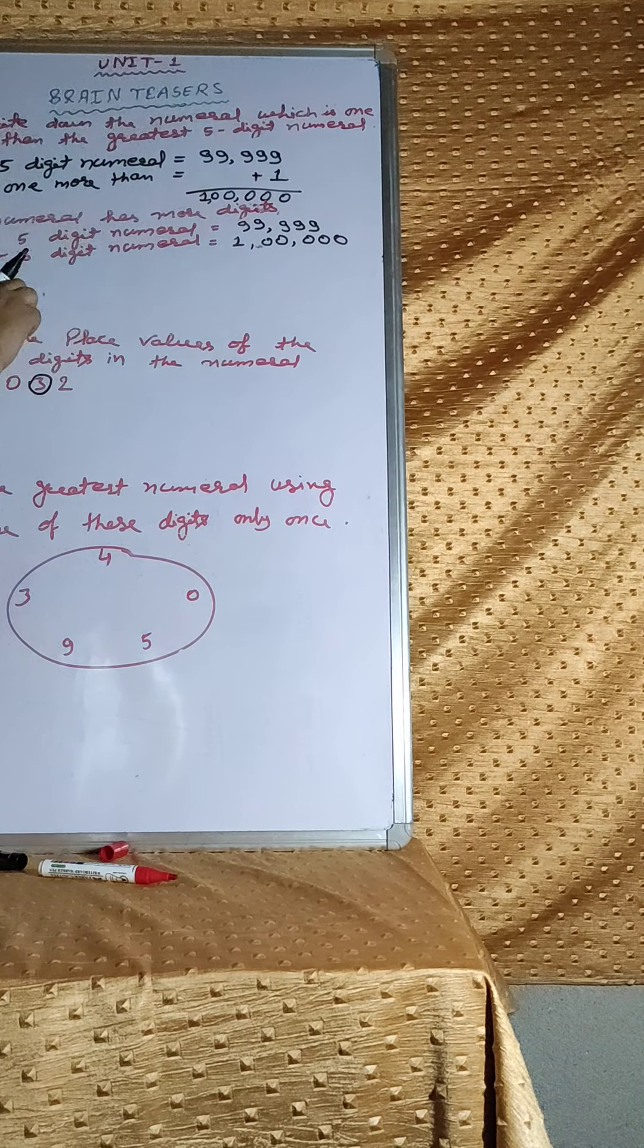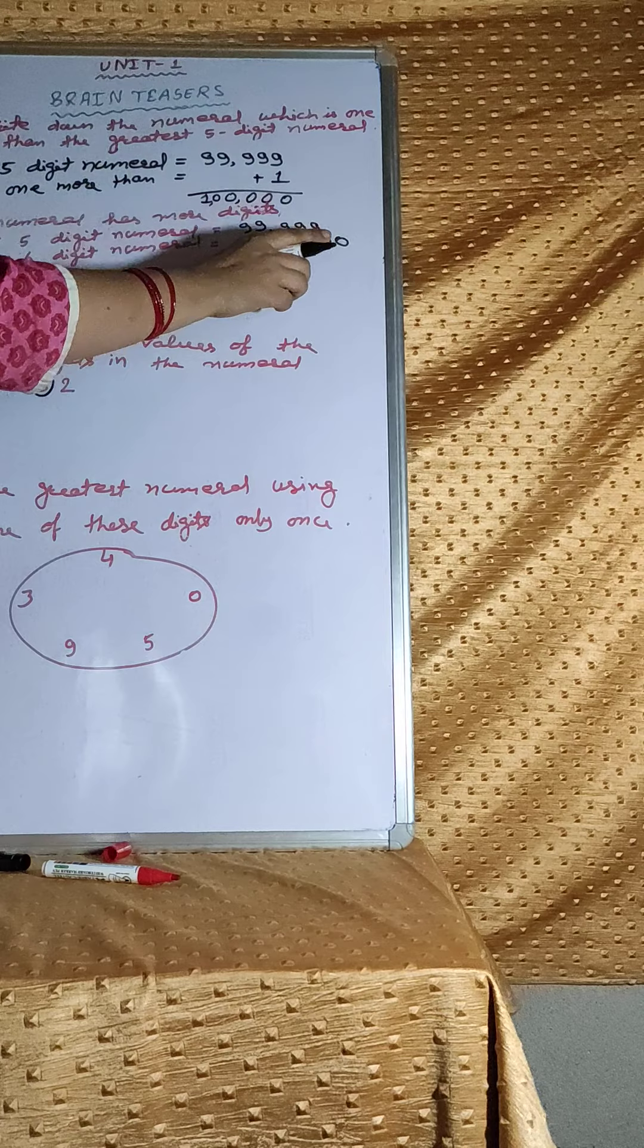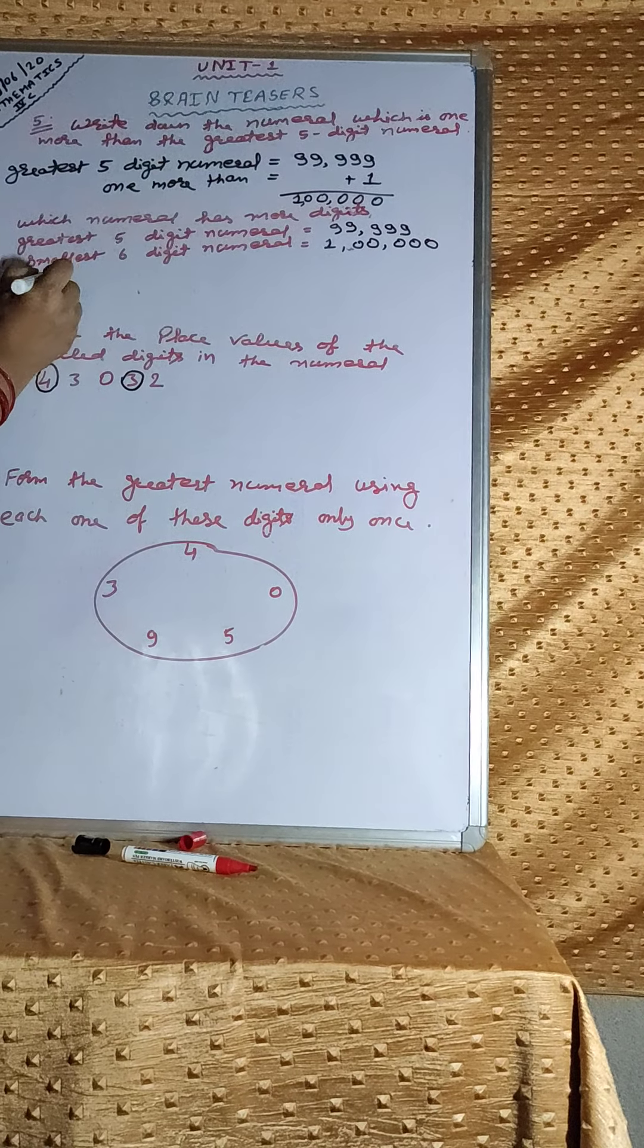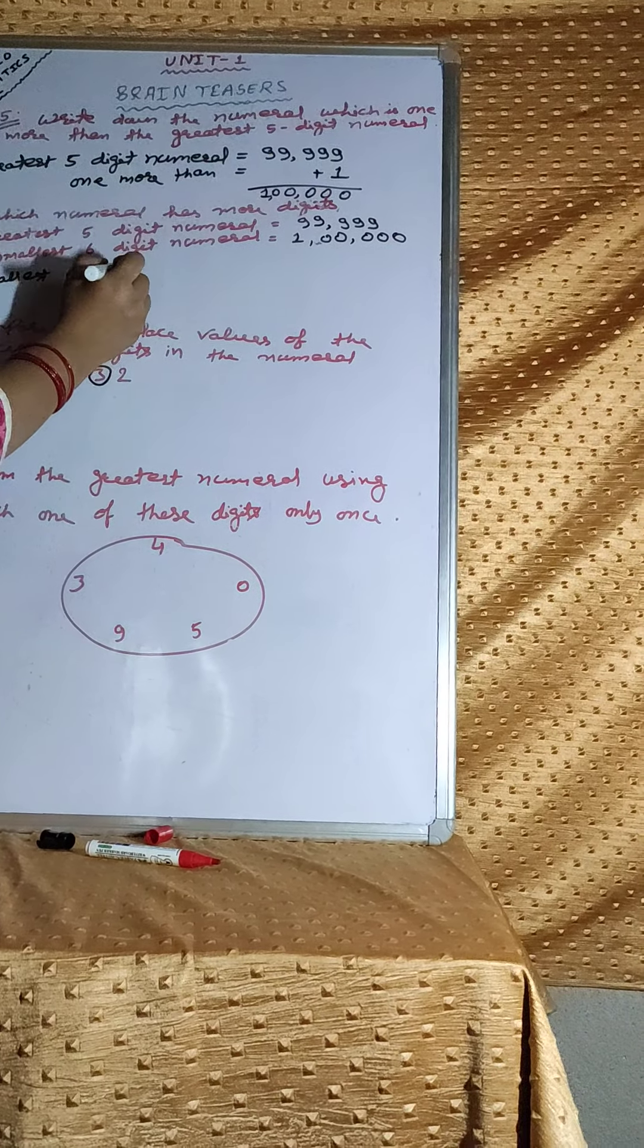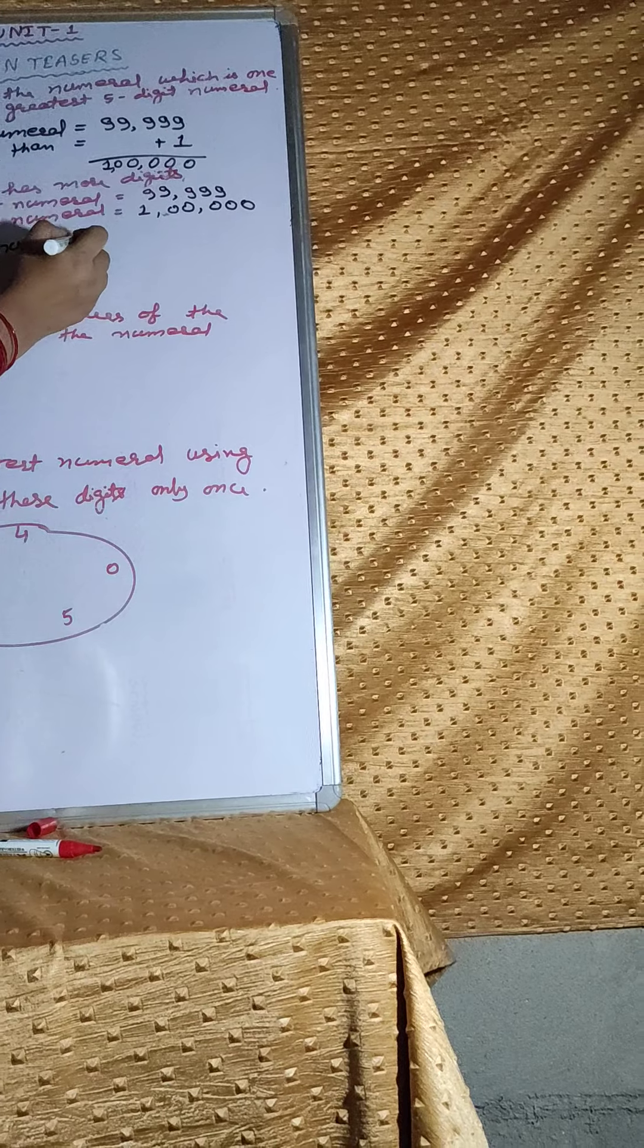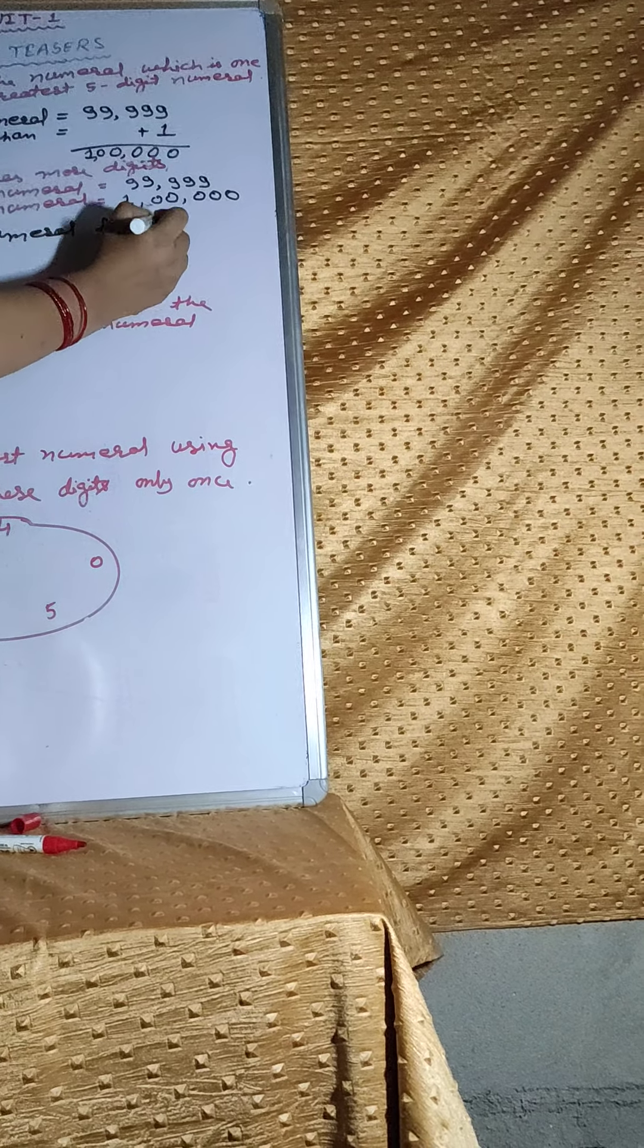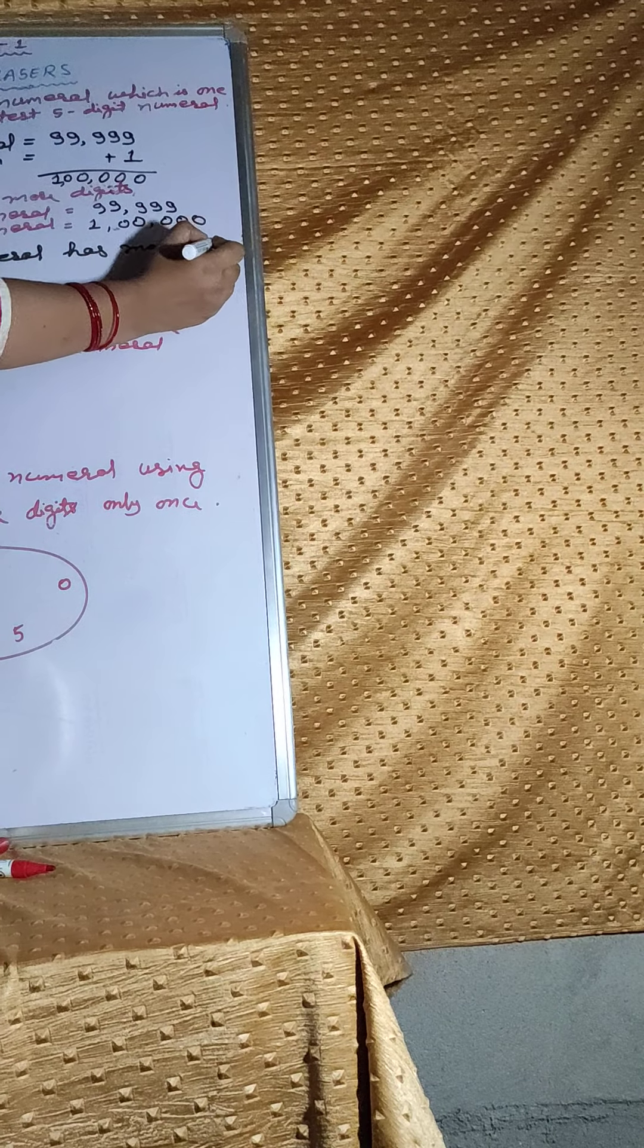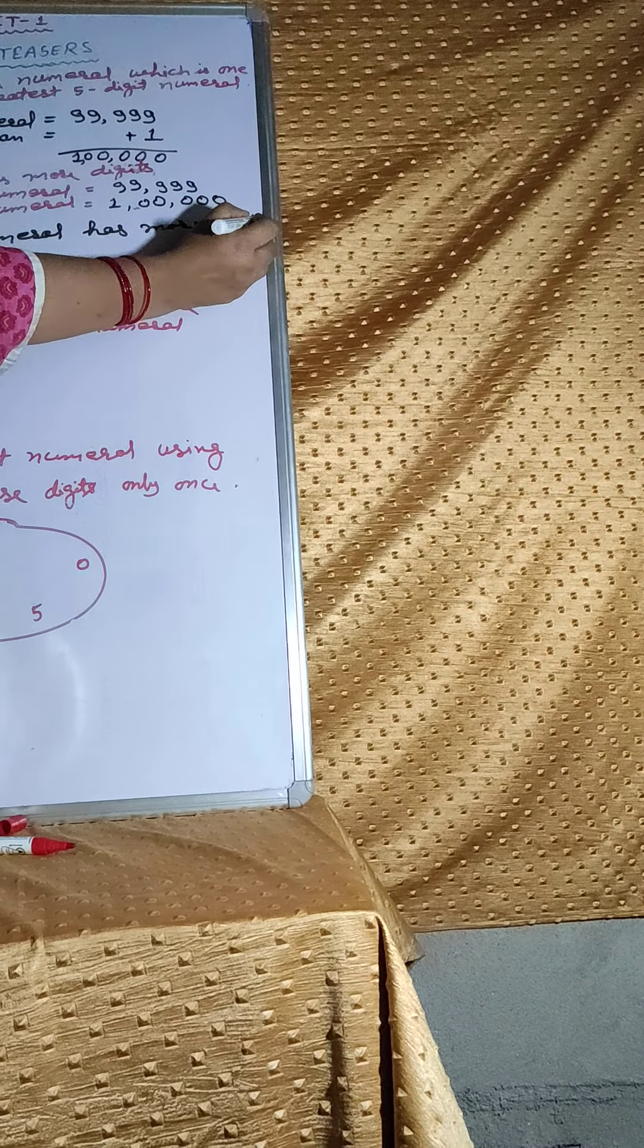Obviously, the smallest 6 digit numeral has more digits. We will write here: more digits.